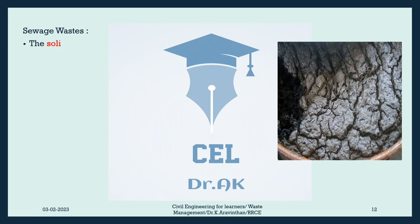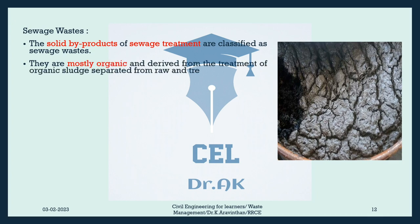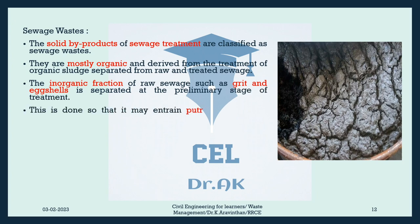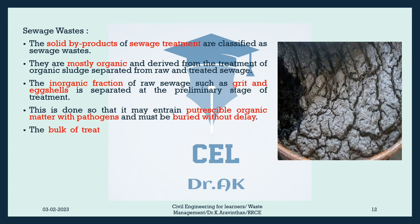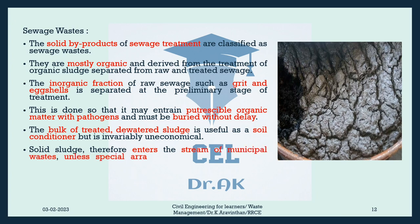Sewage Wastes: The solid byproducts of sewage treatment are classified as sewage wastes. They are mostly organic and derived from the treatment of organic sludge separated from raw and treated sewage. The inorganic fraction of raw sewage such as grit and eggshells is separated at the preliminary stage of treatment, so that it may not entrain putrescible organic matter with pathogens, and must be buried without delay. The bulk of treated, dewatered sludge is useful as a soil conditioner but is invariably uneconomical. Solid sludge therefore enters the stream of municipal wastes unless special arrangements are made for its disposal.